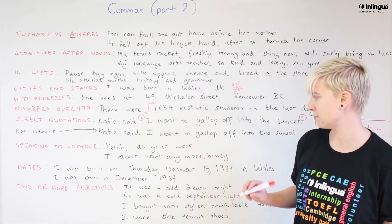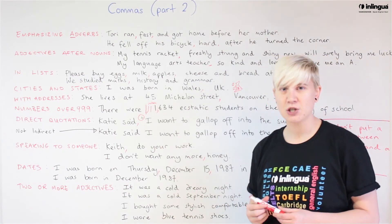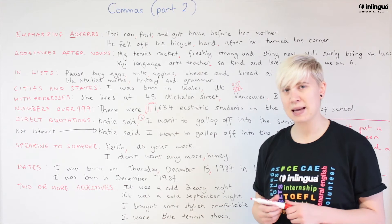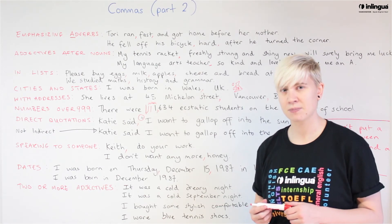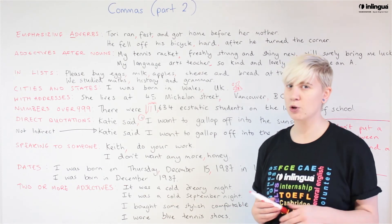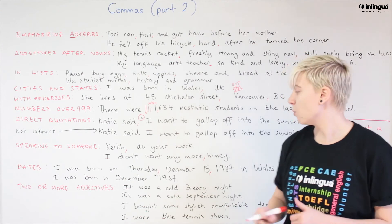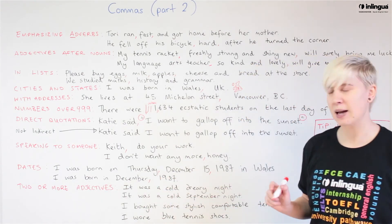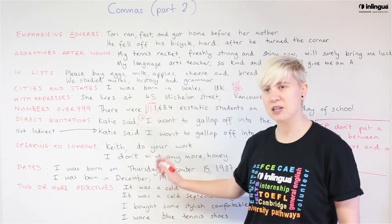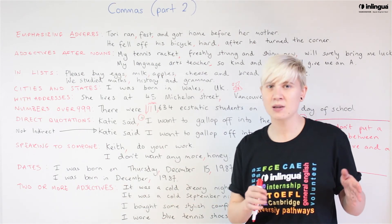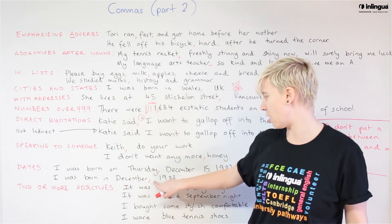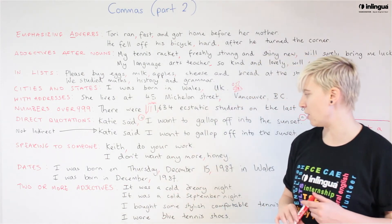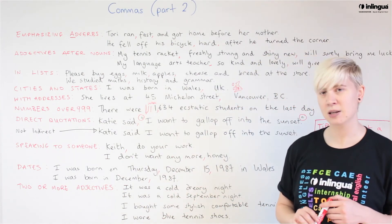What if we just use the month? 'I was born in December, 1987.' Comma or no comma? We do need a comma — just one. We're going from the month to the year, from smaller to larger, so we put a comma in to separate those two pieces of information: 'I was born in December, 1987.'